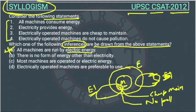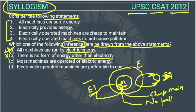Option B: there is no form of energy other than electricity. The question is only talking about electrical energy, but there can be other forms of energy. So we cannot confirm this — we are not sure about it. This cannot be drawn from the given statements, as it is not definite.